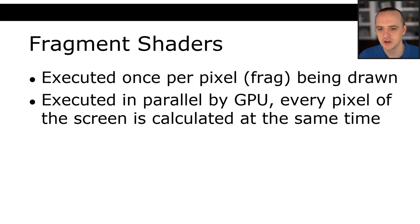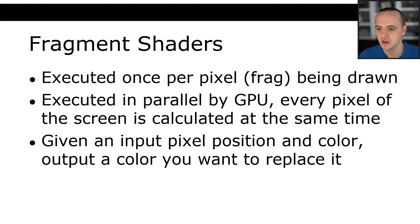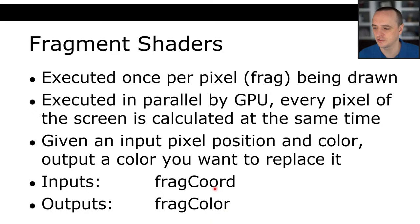What you just saw from the Mythbusters is exactly the same analogy - all of those paintballs flying at the same time is what's happening when you do shaders on the GPU. Given an input pixel position and color, the output of a shader is the color that you want to replace it with. The inputs are fragCoord and the outputs are fragColor. The frag is the fragment, which is essentially the pixel. We'll see what these inputs and outputs mean once we start live coding today.